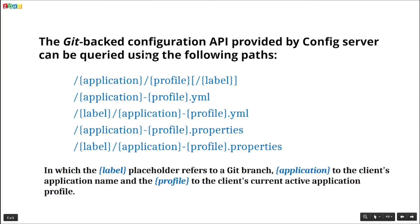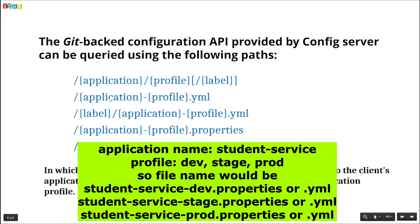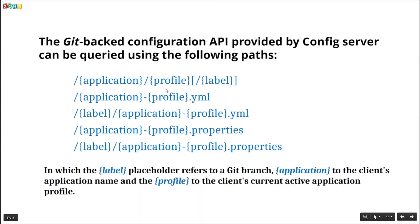The Git-backed configuration API provided by the config server can be queried using the path: /application/profile/label or /application/profile.yml. Here 'application' is the microservice application name — for example, 'student-service'. 'Profile' is like development, test, staging, or production. The 'label' placeholder refers to the Git branch.